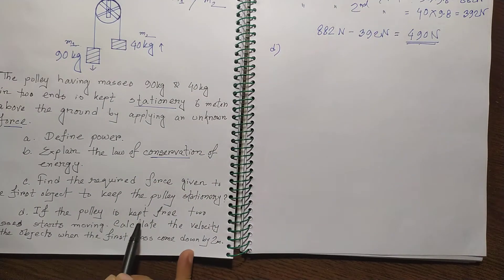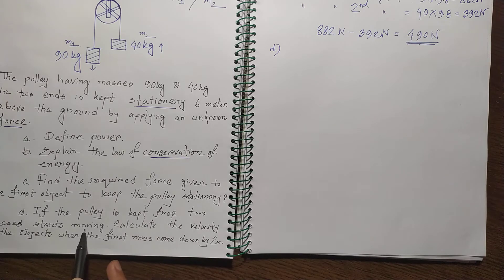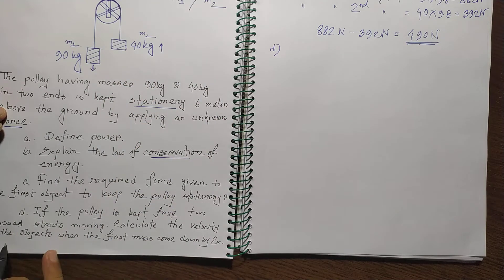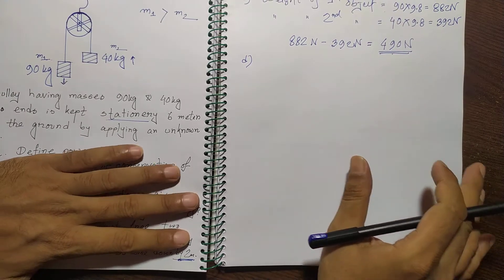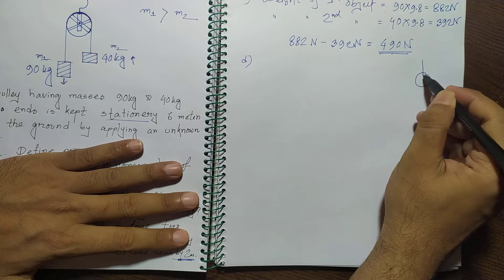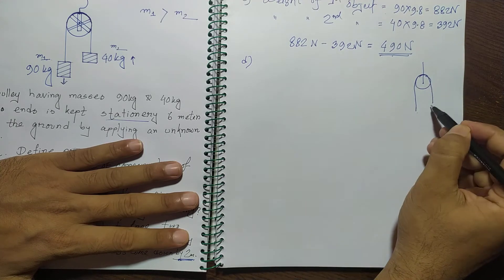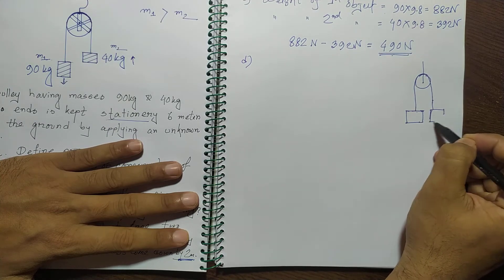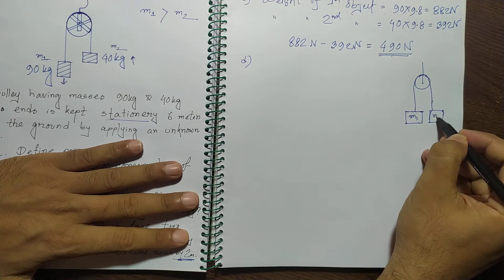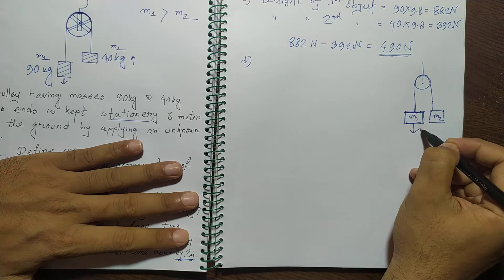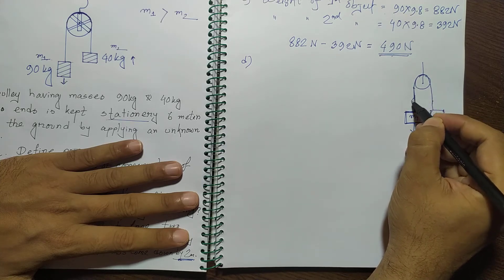The next question: if the pulley is set free, the two masses start moving — the heavier mass comes down and the lighter one goes up. We need to calculate the velocity of the object when the first mass comes down by 2 meters. Consider a pulley with masses m1 and m2 hanging on each side.